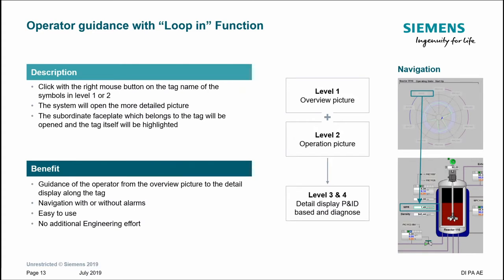APG also has a loop-in function - PCS 7 has this built in by default - and APG takes advantage of this, allowing the operator to navigate from the process overview picture straight down to the detailed displays. This makes the system easier to navigate and also provides a chance for the operator to think about the decisions they are about to make before confirming them, again minimizing the likelihood of doing errors.